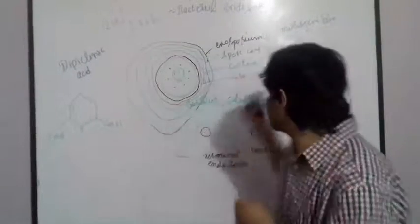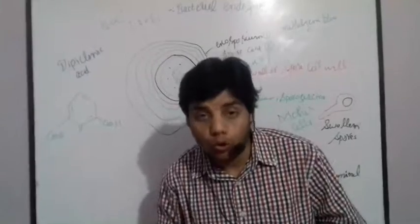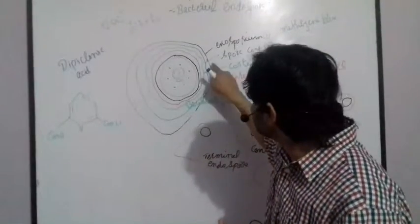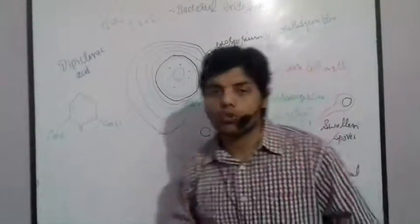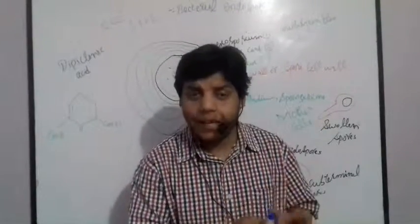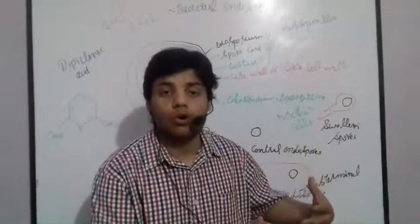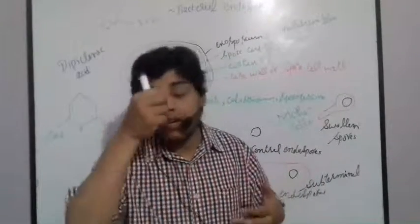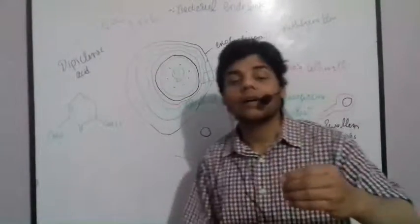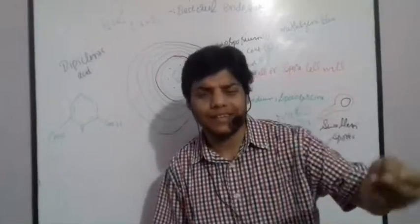The second layer is the spore coat, present beneath the exosporium. The spore coat is strong, fairly thick, and impermeable to some chemical toxins and heat as well. Due to this layer, the bacteria are heat-resistant. It also resists the cell from chemical toxins.